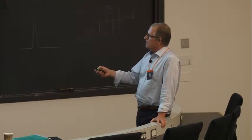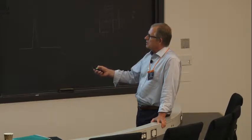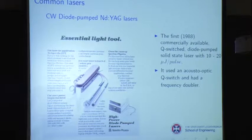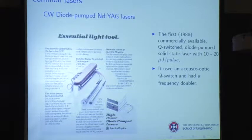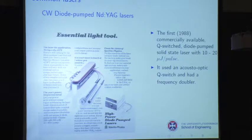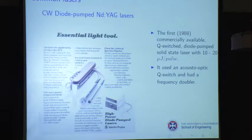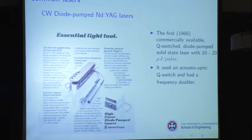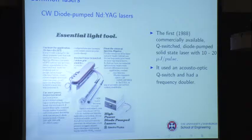That laser had an acousto-optic Q-switch inside and a frequency doubler on the front. It was used for link blowing — in the old days, they made memory chips with a whole lot of extra circuitry, tested the chip, found places not working properly, then blew the laser links to them. When you bought a memory chip, there were all kinds of dead places — that's how they made chips in those days, and that's what this laser was designed for.